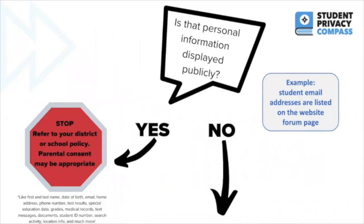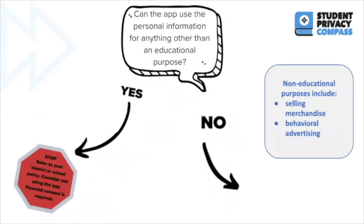The next question is: is that personal information publicly displayed? For example, are student email addresses listed on a website forum page? If any personal information is displayed publicly, you must stop, refer to your district or school policy, and consider whether parental consent is appropriate. If personal information is not displayed publicly, move on to the next question: can the app use personal information for anything other than an educational purpose? Think back to commercial purposes such as selling merchandise or behavioral advertising. If yes, you must stop and refer to your district or school policy.